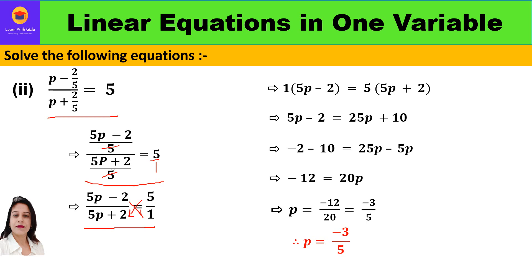So 1 in bracket (5p minus 2) is equal to 5 in bracket (5p plus 2). Anything multiplied by 1 is the number itself, so we get 5p minus 2. Then 5 times 5p and 5 times 2 gives 25p plus 10. Now take like terms together: minus 2 minus 10 on the left, and 25p terms on the right.